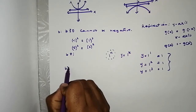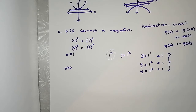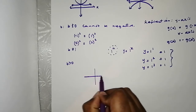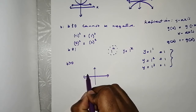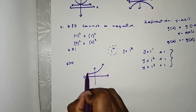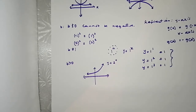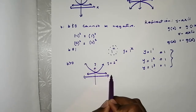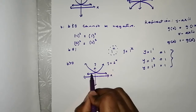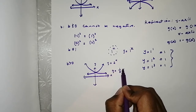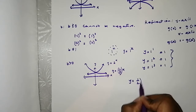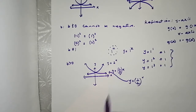B is greater than 0, and B can also be a fraction. For example, if this is the graph Y equals 2 to the X, a reflection on the Y-axis will give Y equals 1 divided by 2, to the X. So B can also be a fraction.